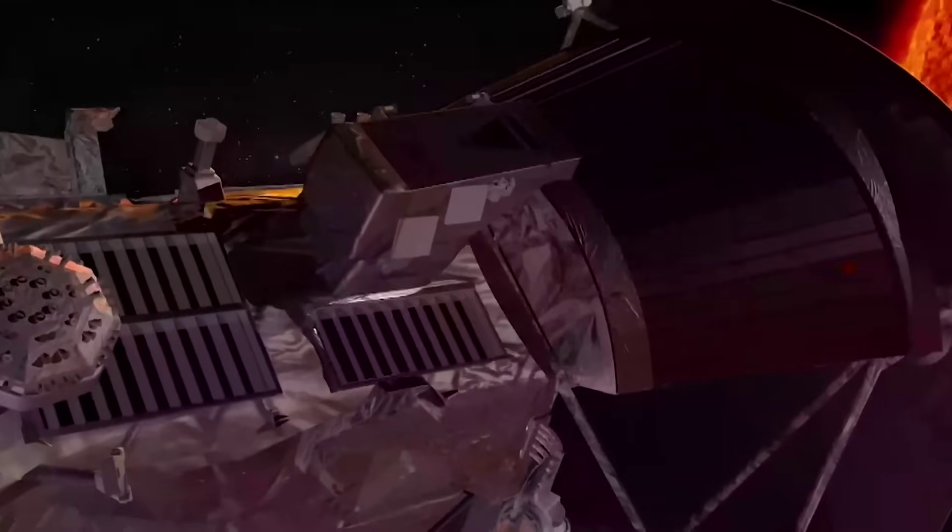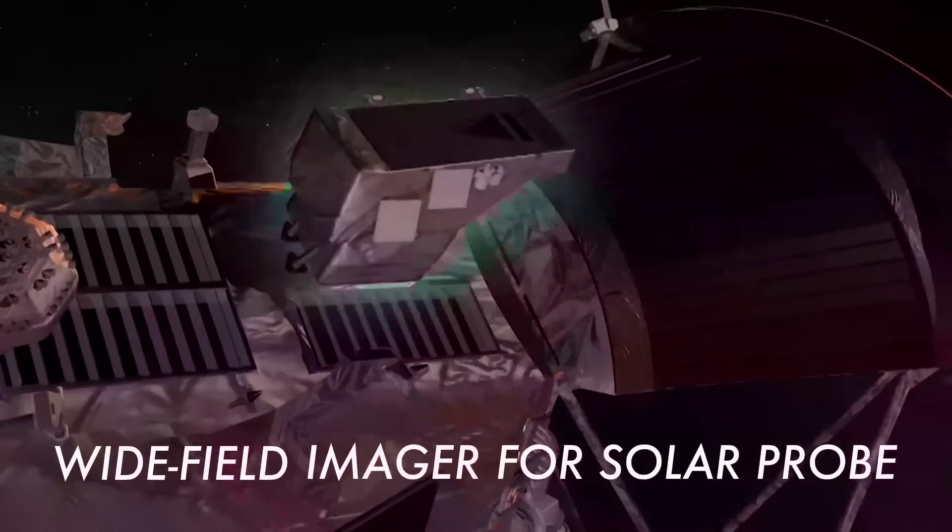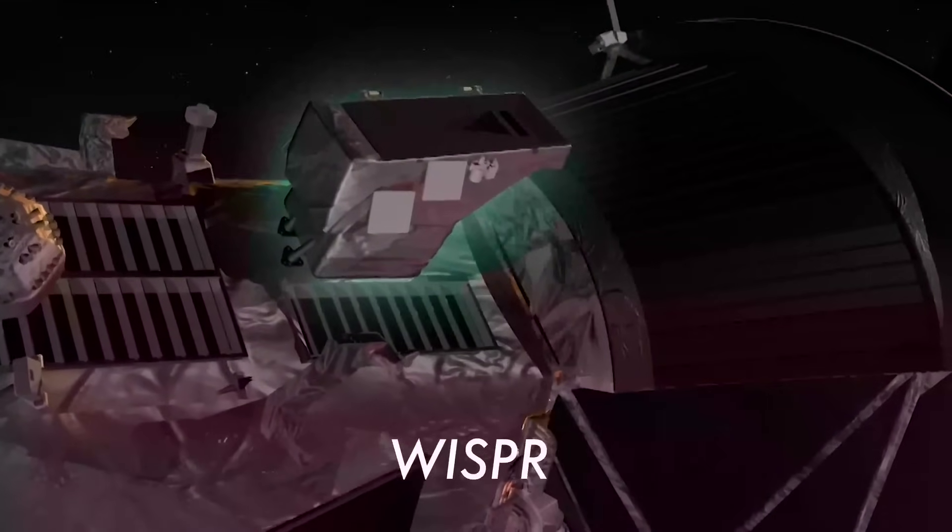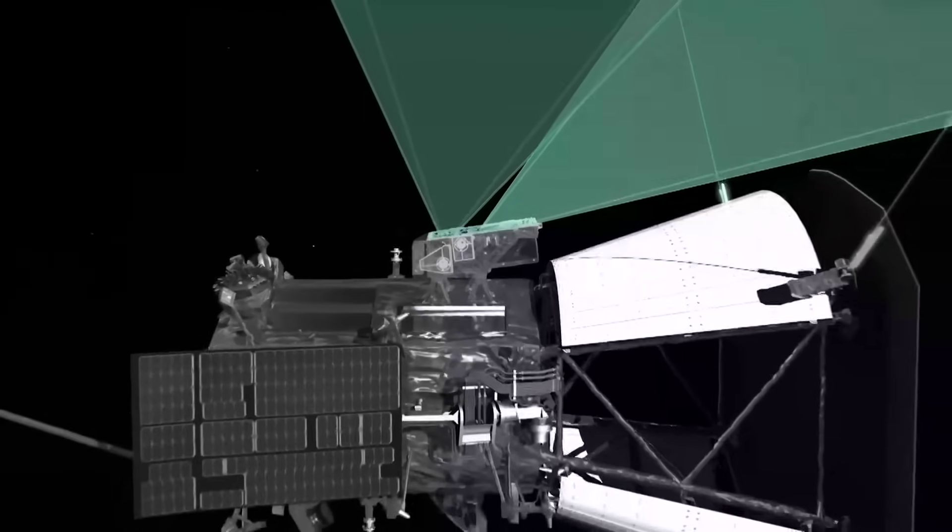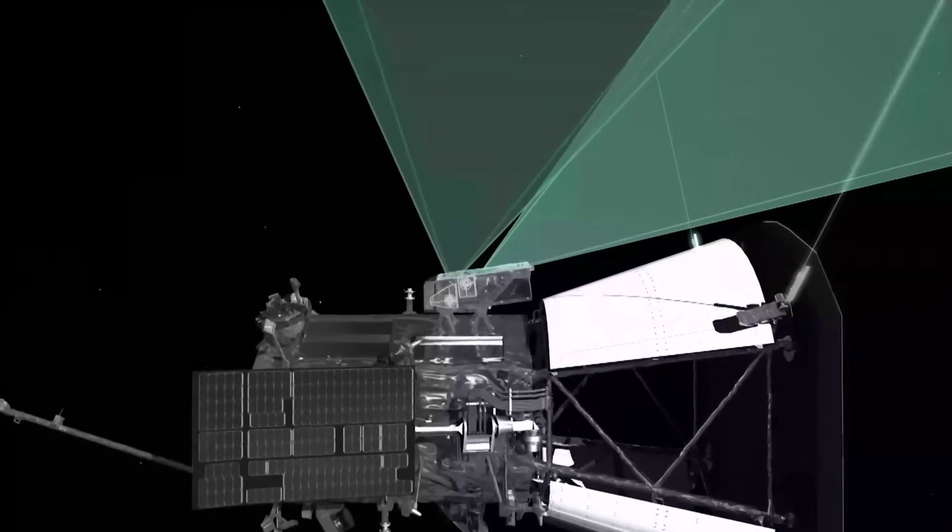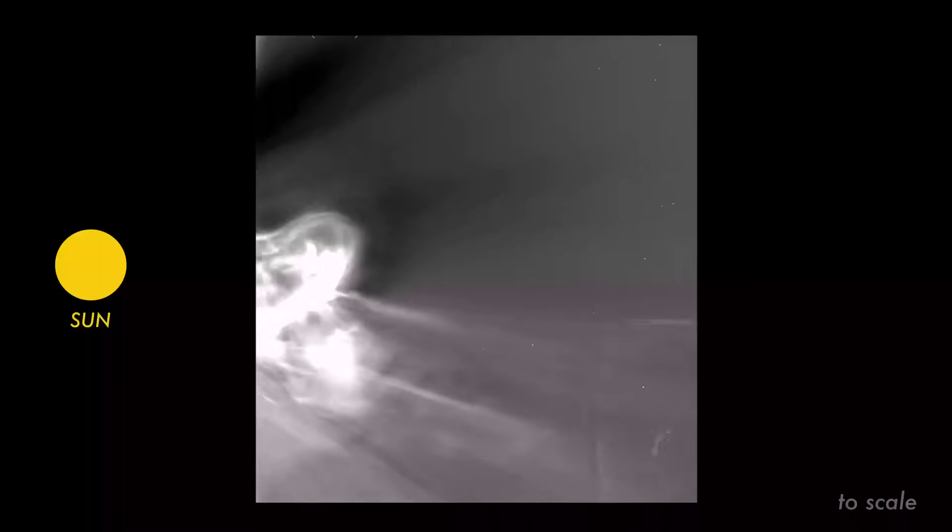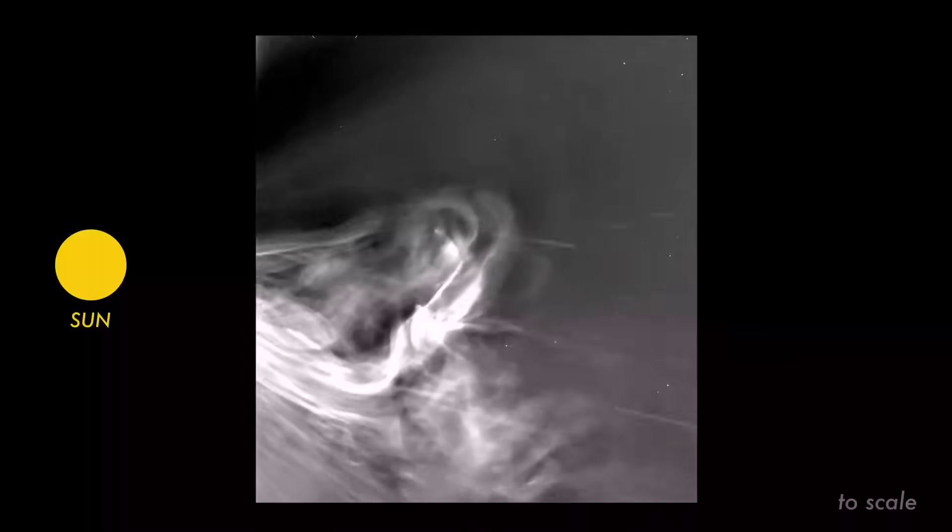The images were taken by the spacecraft's Wide Field Imager of a Solar Probe, or WISPR, which observes space in visible light. WISPR doesn't look at the sun directly. Instead, it captures solar material just as it comes off of the sun.